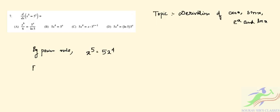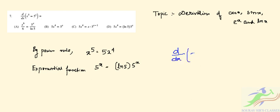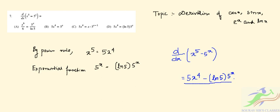For the exponential function 5ˣ, its derivative is ln(5) · 5ˣ. Therefore, d/dx of (x⁵ − 5ˣ) equals 5x⁴ − ln(5) · 5ˣ. The correct option for question 7 is D.